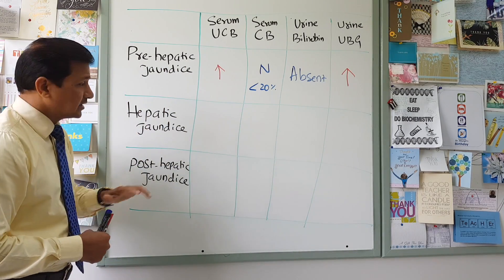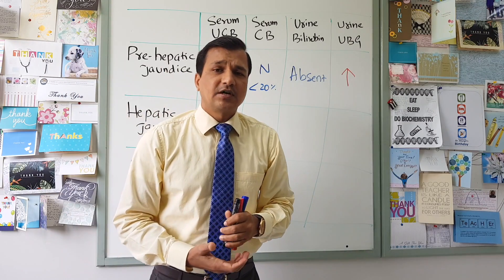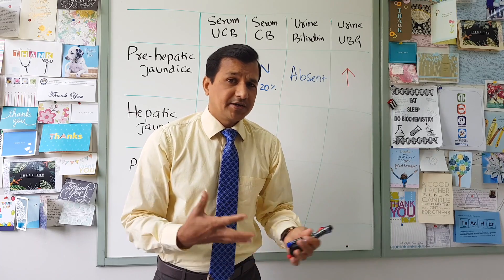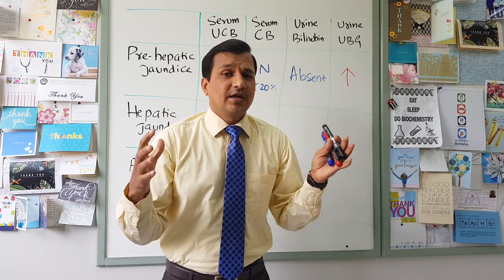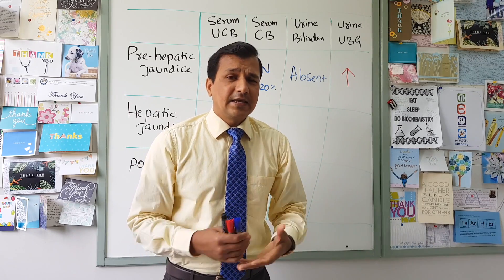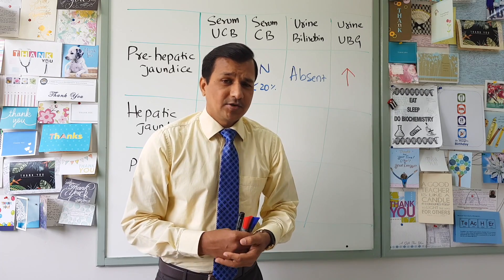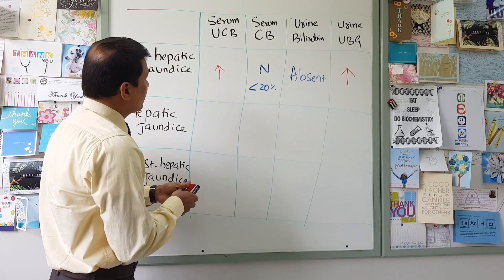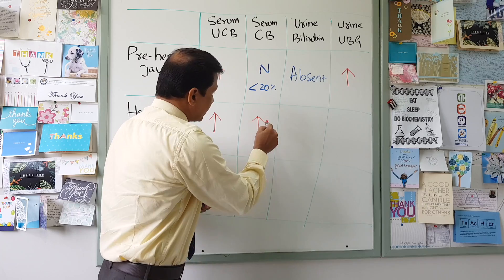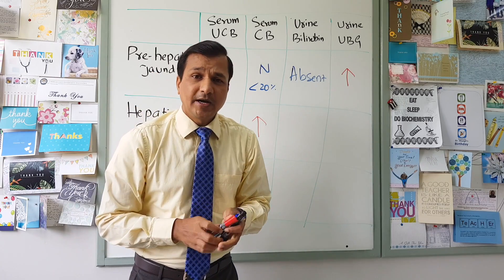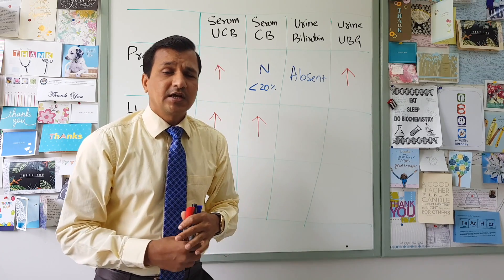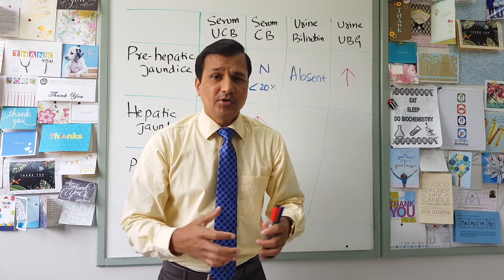Now moving to hepatic jaundice. Hepatic jaundice is most commonly caused by hepatitis — including viral hepatitis and alcoholic hepatitis. Because of inflammation of the hepatocytes, there is leakage of their contents. This means there will be elevation of both unconjugated bilirubin and conjugated bilirubin in hepatic jaundice. So both kinds of bilirubin are elevated, giving rise to combined hyperbilirubinemia.